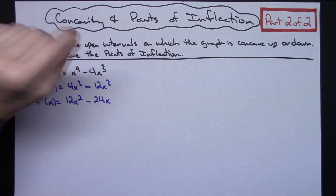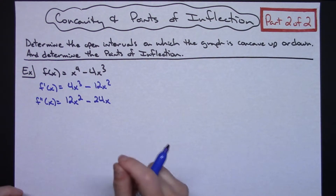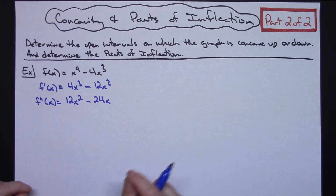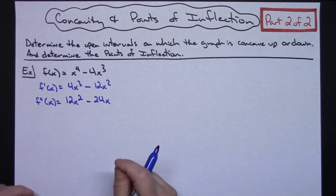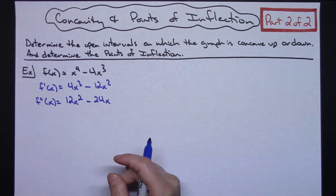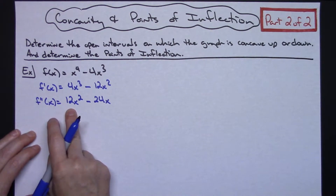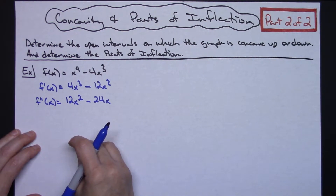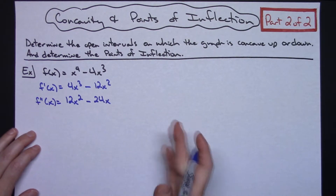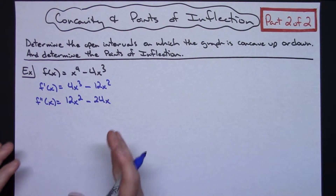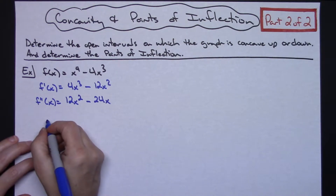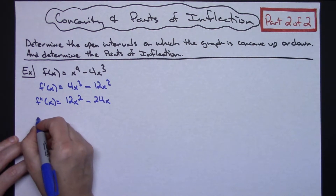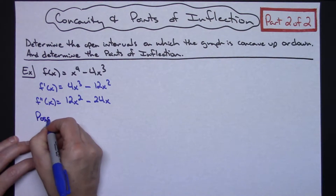Now I set that second derivative equal to zero to find possible points of inflection. I really emphasize 'possible' points of inflection because just because you set the second derivative equal to zero and find some points, something else funky could be going on. So at this point we have possible points of inflection.